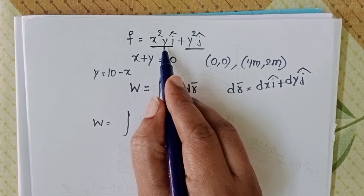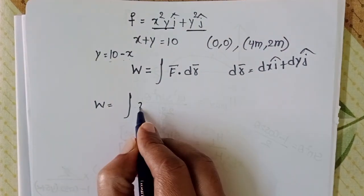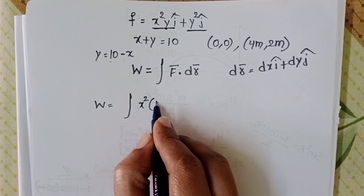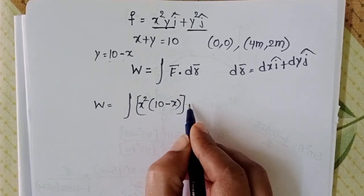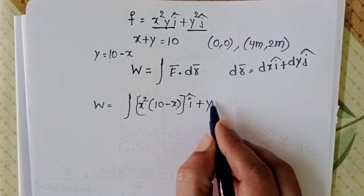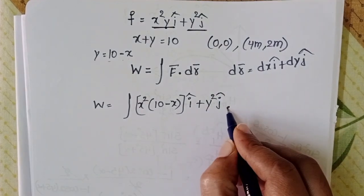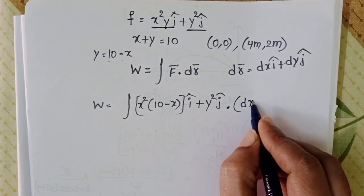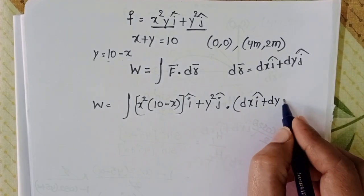Only in the first term substitute 10 minus x for y. So x² (10 - x) î plus y² ĵ. This is F⃗ dot dr⃗ where dr⃗ equals dx î plus dy ĵ.